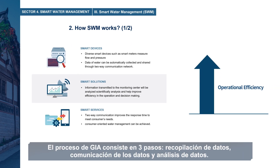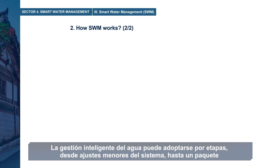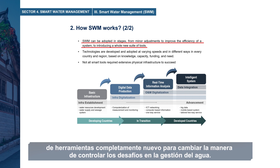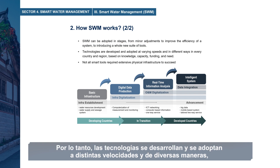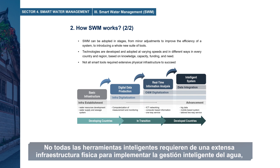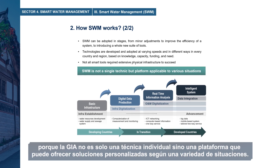The SWM process consists of three steps: data collection, data communication, and data analysis. Smart water management can be adopted in stages, from minor adjustments of a system to a whole new suite of tools, changing the way we control challenges in water management. Technologies are developed and adopted at varying speeds in different ways, based on knowledge, capacity, funding, and many other existing factors. Not all smart tools require extensive physical infrastructure, because SWM is not just a singular technique, but a platform that can offer customized solutions to varying situations.